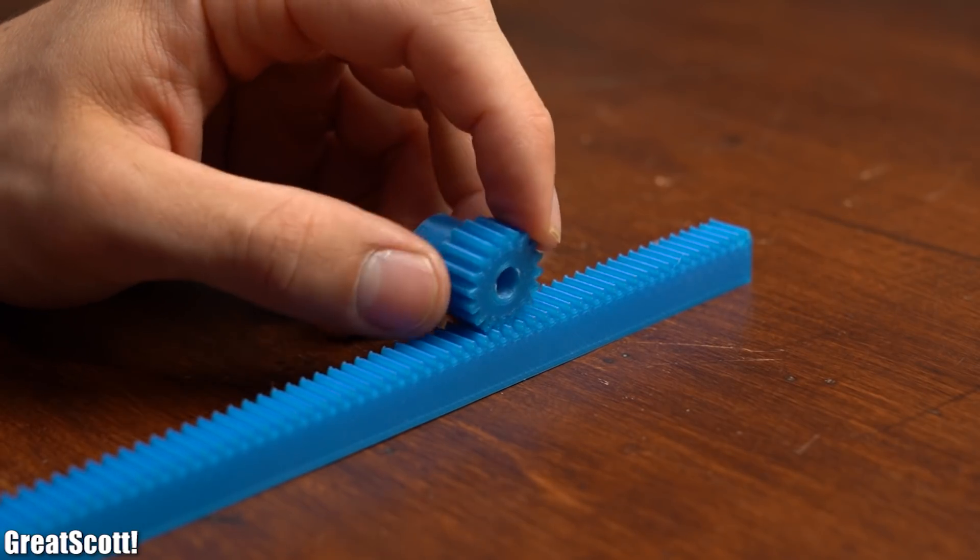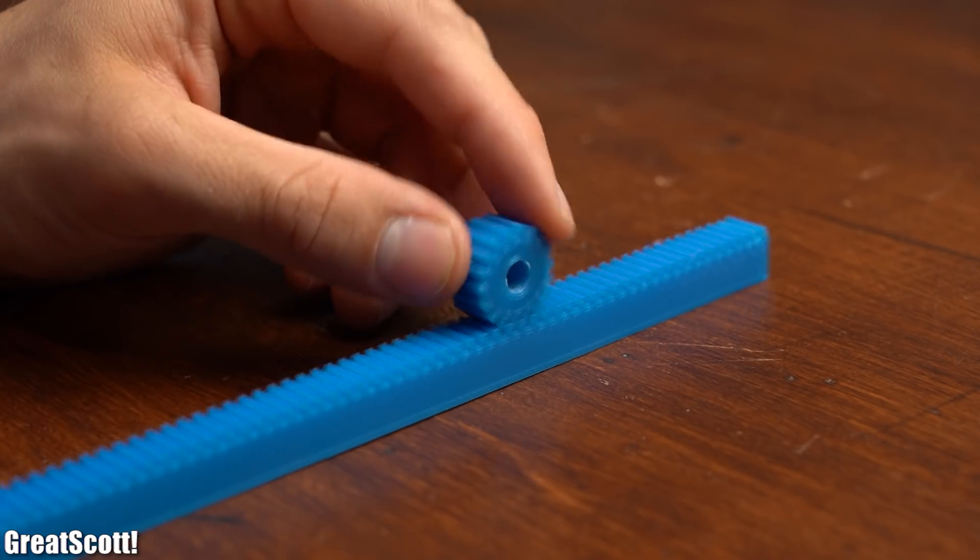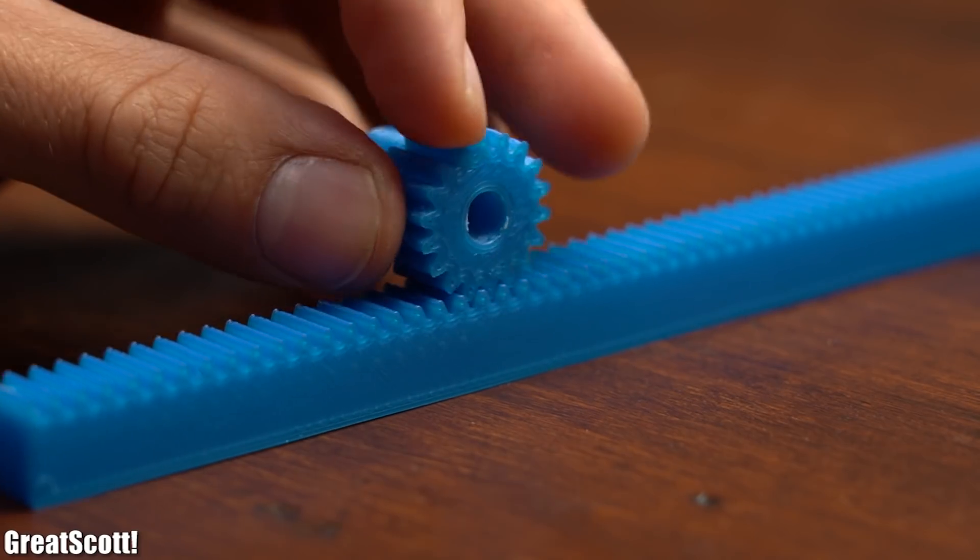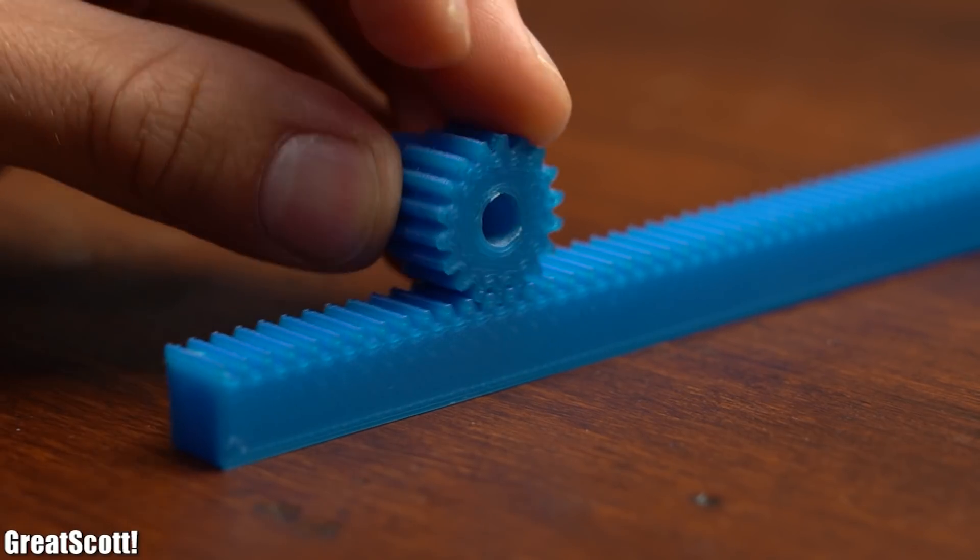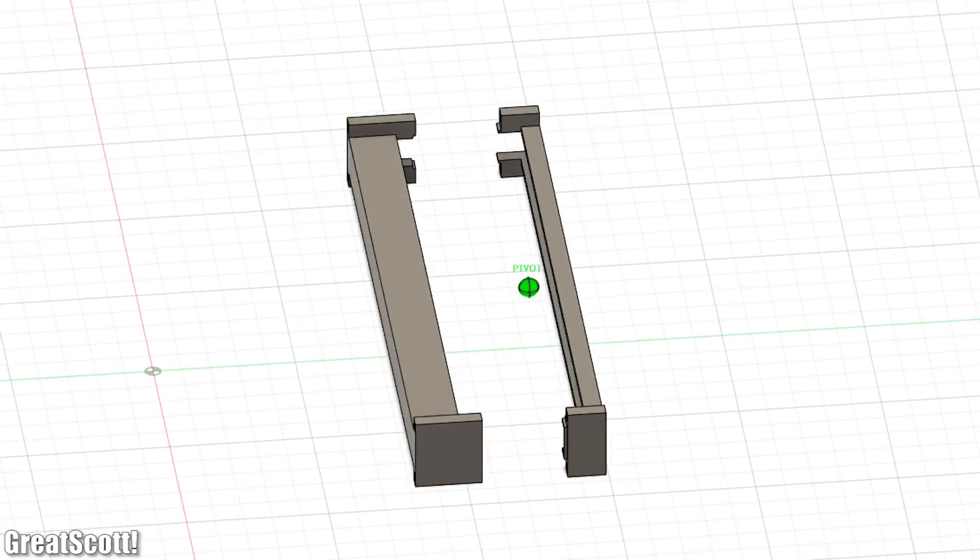As you can see those two parts can later be used to slide the rack forwards and backwards and thus opening and closing the window but as you might already have guessed this rack cannot float in mid air which is why I also designed this case for it.